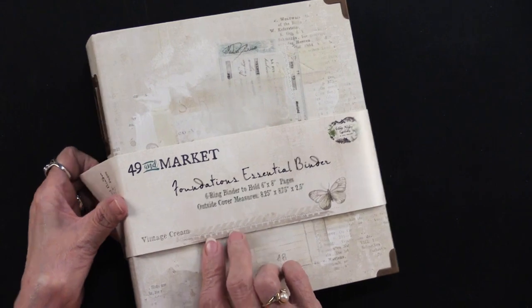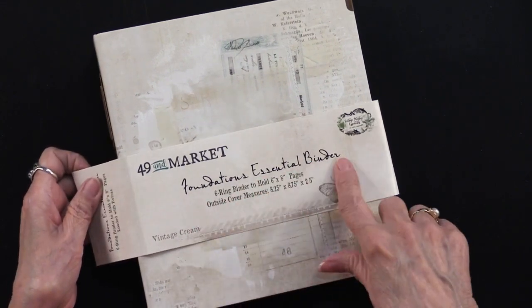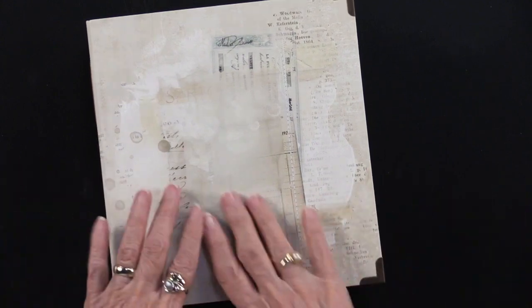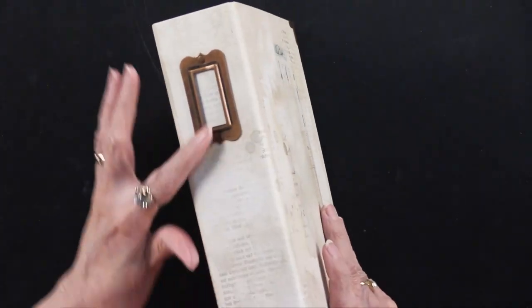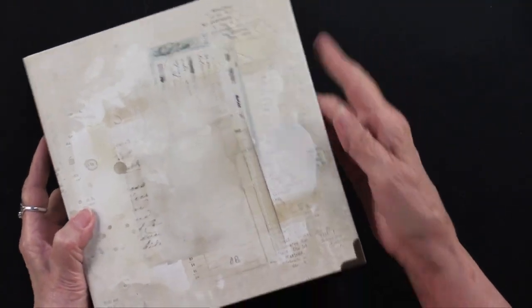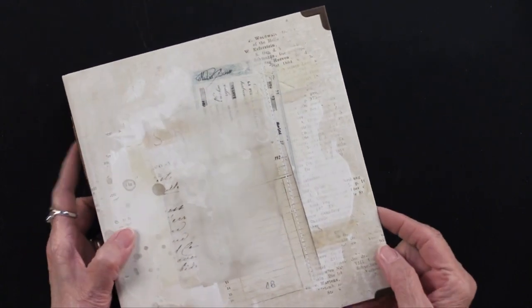So this is the Vintage Cream. And this is a foundation's essential binder. So look at this. You would expect from 49th and Market to have this beautiful collage artwork, wouldn't you? Now on the side, there is this metal label holder as well as metal corner reinforcements just right there.